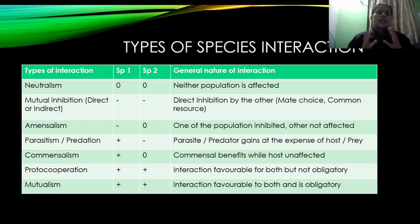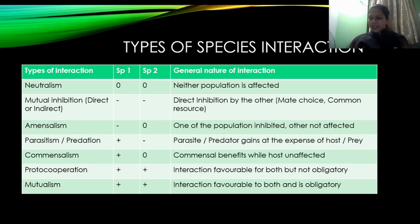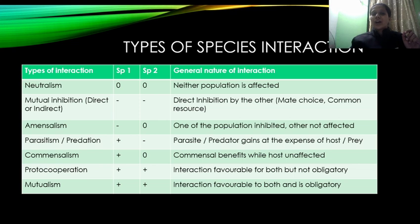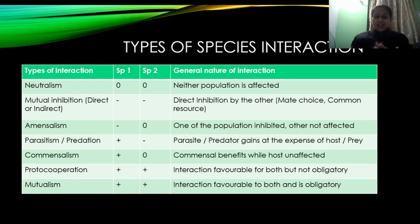तो अब कितने type के interactions हैं? एक-एक करके समझेंगे। हमारे पास एक बहुत simple सा table है जिसमें types of interaction, SP1 (species 1), SP2 (species 2), और general nature of interaction लिखा है — मतलब जब ये interact करते हैं तो उसका outcome क्या आता है, एक species का दूसरे species के ऊपर क्या प्रभाव पड़ता है।